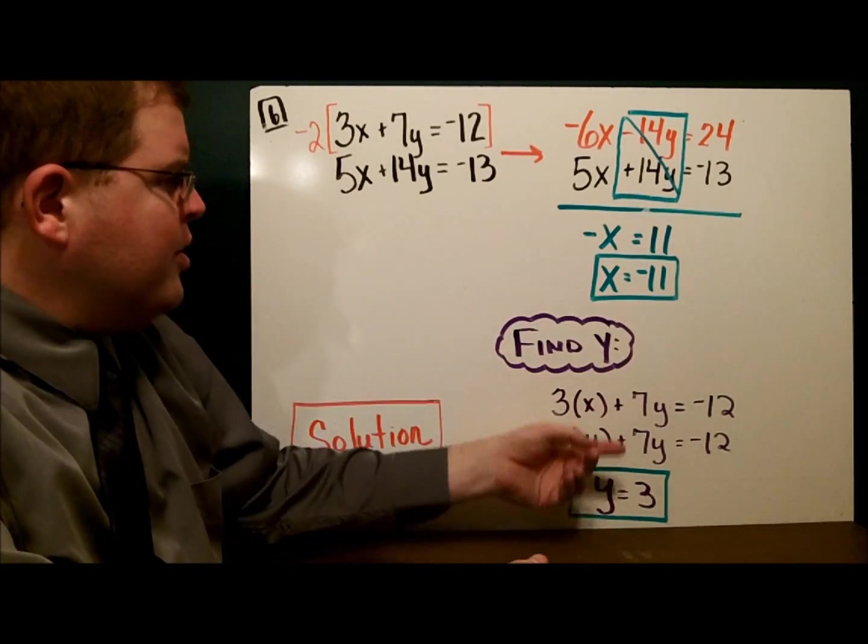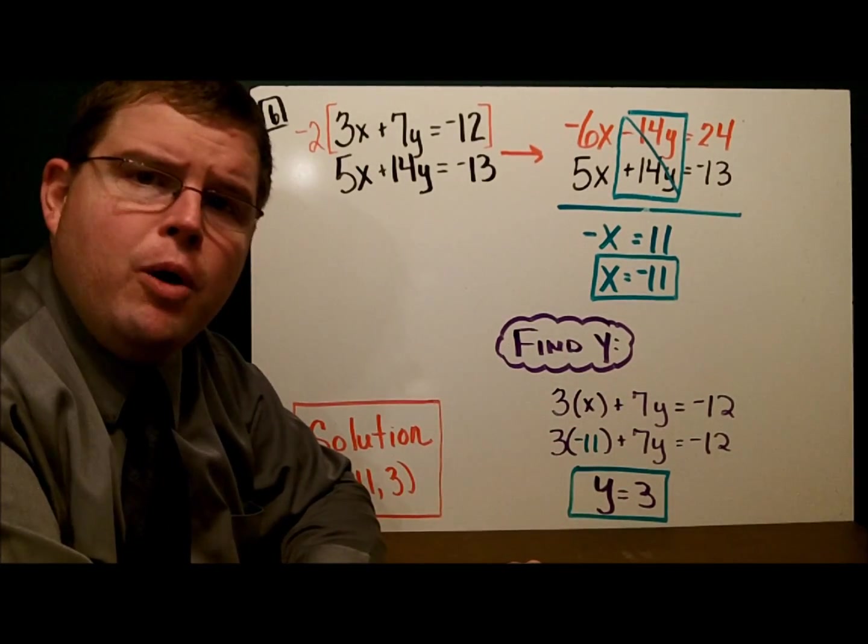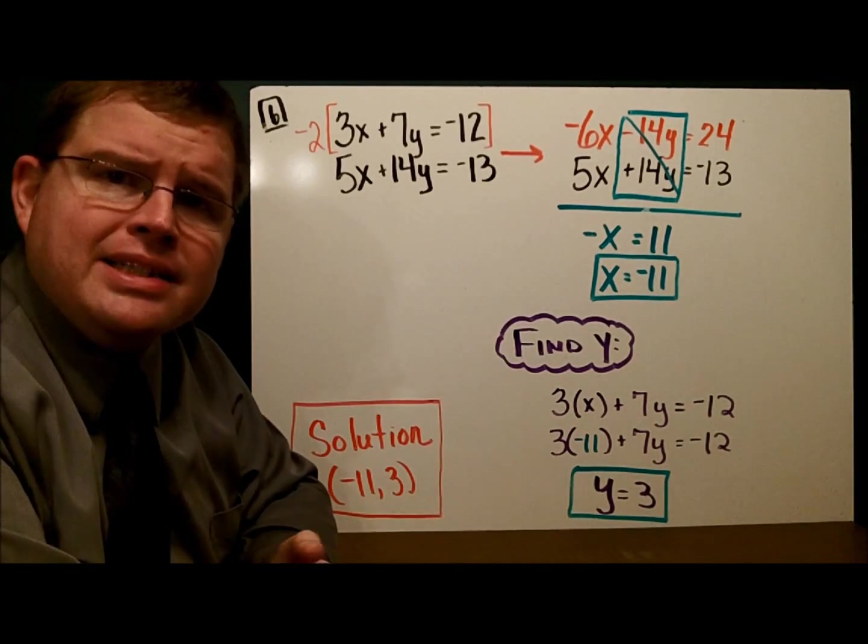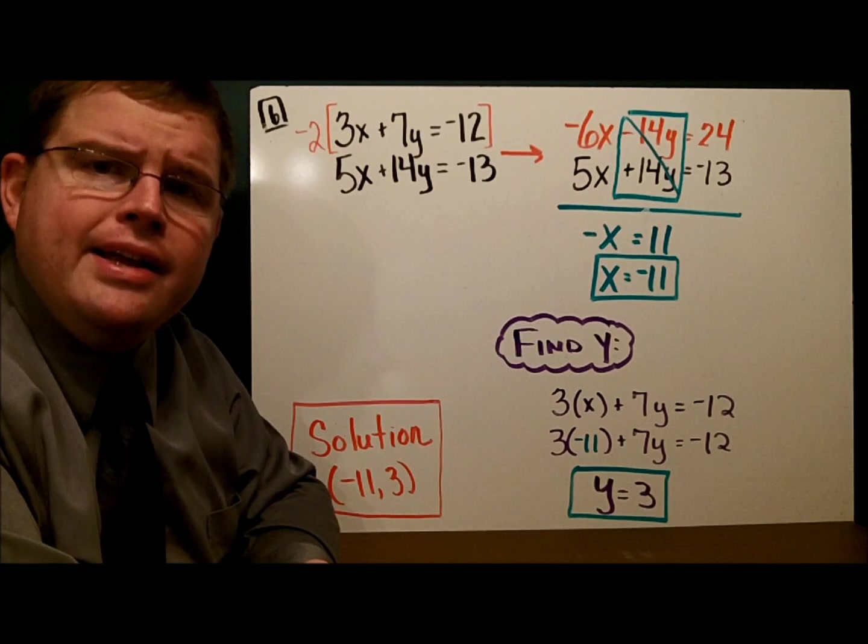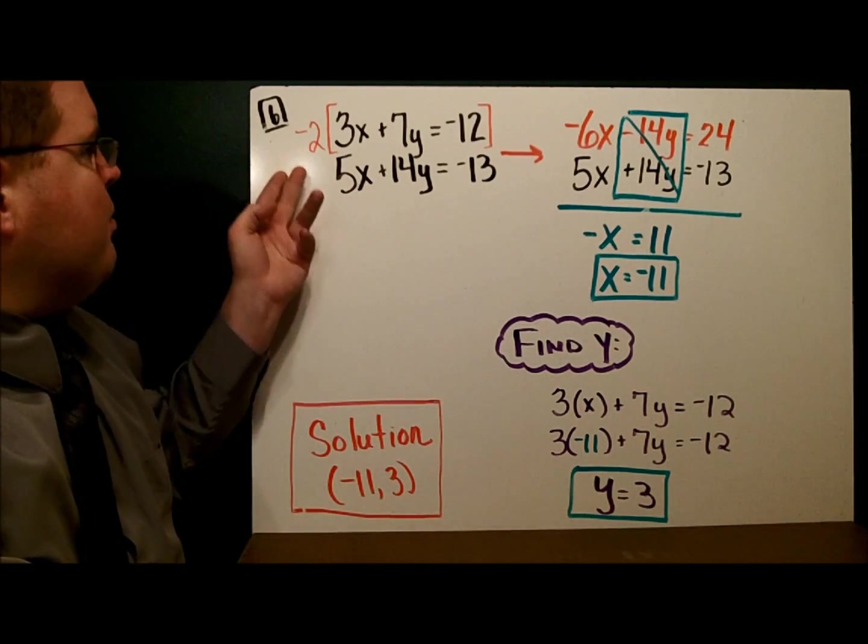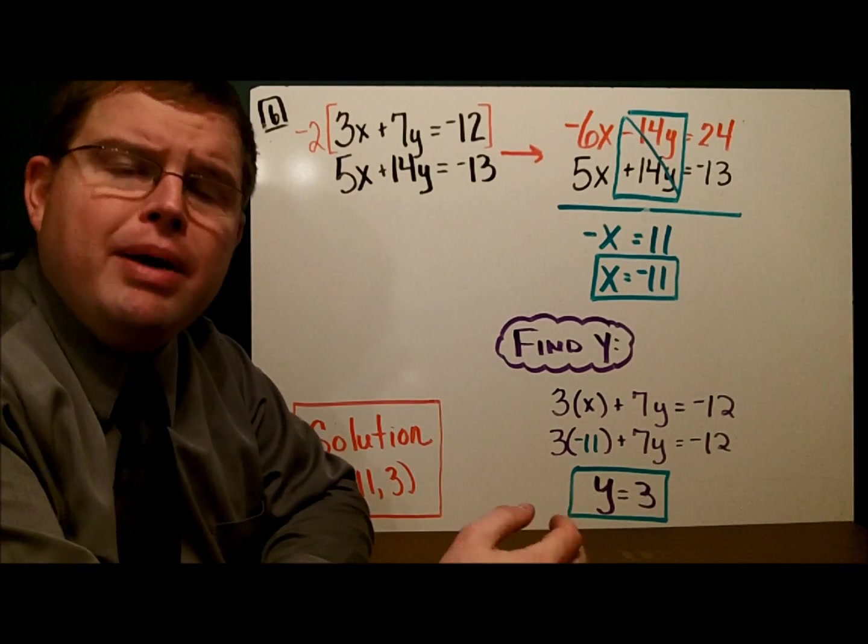Now, we can use the addition method. Our y's cancel out. We're left with negative x equals 11. So x equals negative 11. And now we just go through and find the value that goes with y. We find that the solution is the point (-11, 3). So really, the only different thing here was that we had to multiply one of the equations by some number.